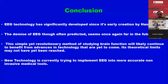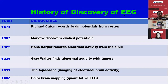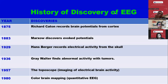New technology is currently trying to implement EEG into more accurate non-invasive medical tools. Let us recapitulate: In 1875, Richard Caton records brain potential from cortex of dogs. Max Knott discovers evoked potentials. Hans Berger records electrical activity from the skull in 1929 — first described in 1924, but recorded in 1929. Gray Walter finds abnormal activity with tumors. Toposcope imaging of electrical brain activity — in our time we also had brain mapping or brain atlas — and color brain mapping, quantitative EEG, we have seen in our lab also.